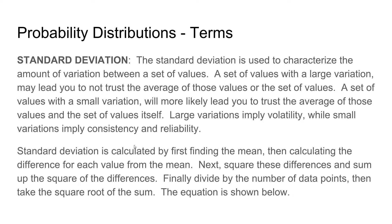The next term is standard deviation. Standard deviation is used to characterize the amount of variation between a set of values. A set of values with a large variation may lead you to not trust the average of those values or the set of values. A set of values with a small variation will more likely lead you to trust the average of those values because it is a better representation of the set of values. Large variations imply volatility, while small variations imply consistency and reliability.